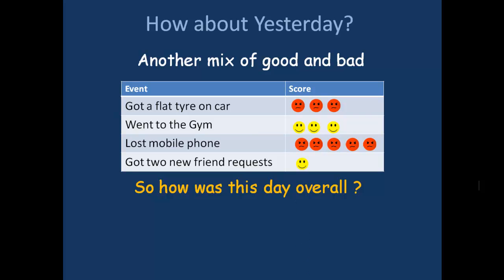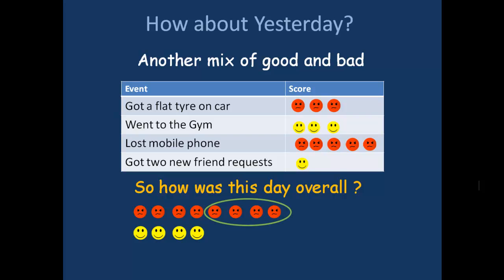So how was this day overall? Well, on the score sheet we have eight unhappies and four smileys. Overall, we've got four extra grumpies. It was a negative four day, or minus four was our overall score.